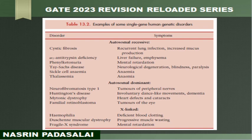Next are those diseases following X-linked pattern. This includes hemophilia, DMD (Duchenne muscular dystrophy), and fragile X syndrome.